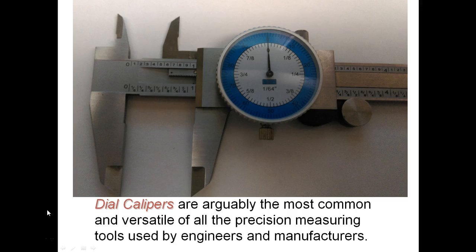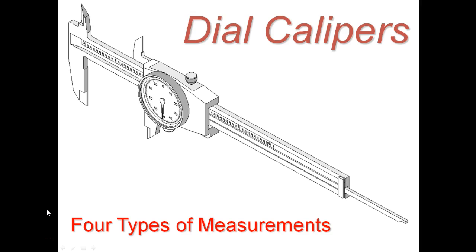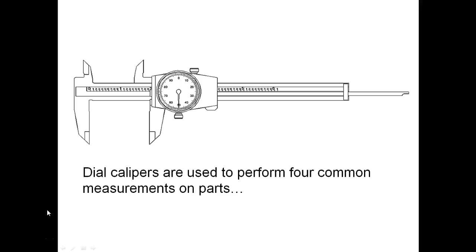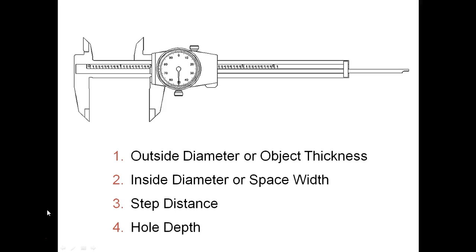Dial calipers are arguably the most common and versatile of all the precision measuring tools. You'll find that they can measure just about anything we need to do. There's four ways of measuring that we can get into using the dial caliper. We have outside diameter, inside diameter, space distance or step distance, and hole depth.